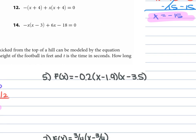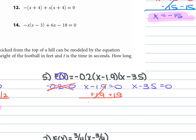For problem 5, we have f(x) = −0.2(x − 1.9)(x − 3.5), which is saying 0 = −0.2(x − 1.9)(x − 3.5). We set each part equal to 0: −0.2 = 0 is a false statement, so we cross it out. For x − 1.9 = 0, add 1.9 to both sides and x = 1.9. For x − 3.5 = 0, add 3.5 to each side and x = 3.5.